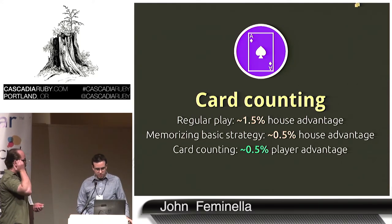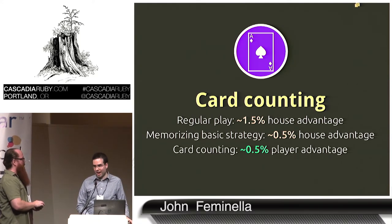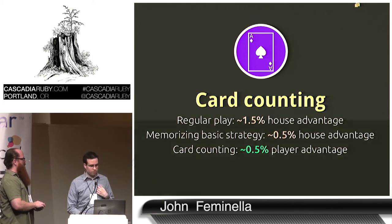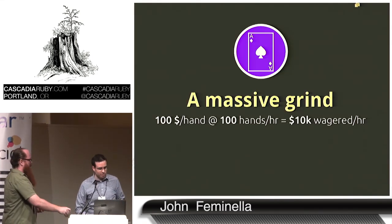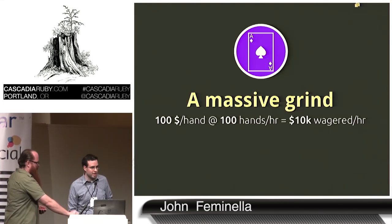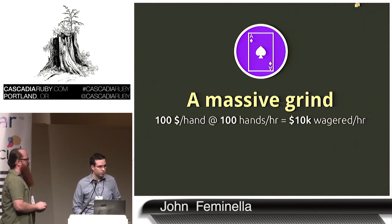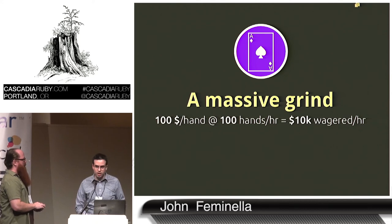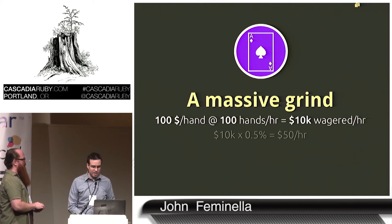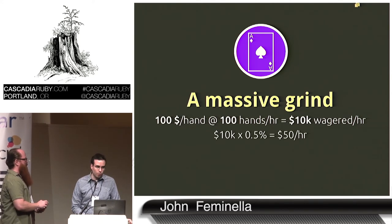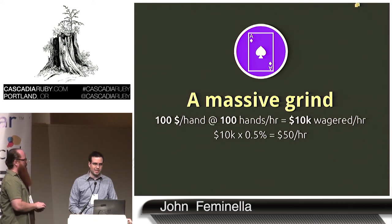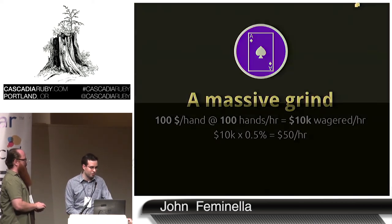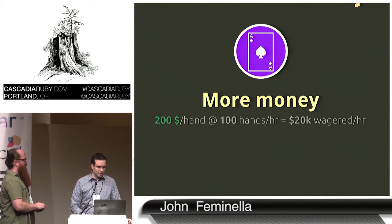If you memorize a special strategy called basic strategy, you can drop that down to half a percent. And if you card count, you can get it to 1.5% in your favor. That means it's kind of a grind — if you bet a hundred bucks a hand at a hundred hands an hour, you're wagering $10,000 an hour, which equates to a $50 an hour wage, probably less than you could make as a contract developer.